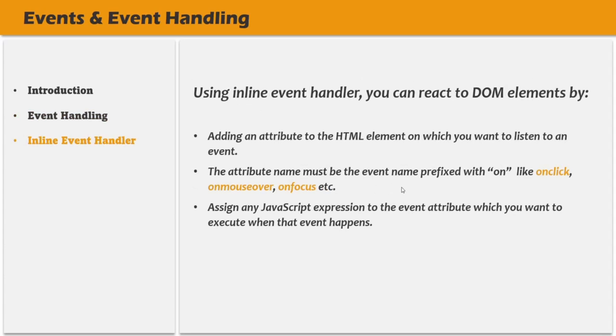To use inline event handling, we need to add an attribute to the HTML element on which we want to listen to an event. The attribute name must be the event name prefixed with 'on'. For example, if we have a button element on which we want to listen to the click event, we add an attribute named 'onclick', and to that attribute we assign a JavaScript expression to execute when that event happens. Let's understand this with an example.